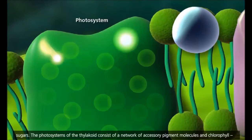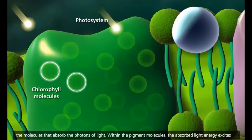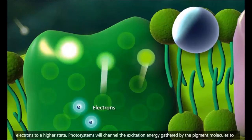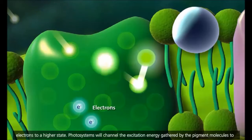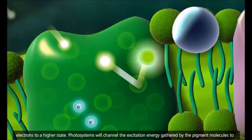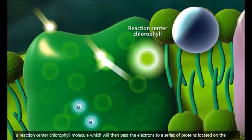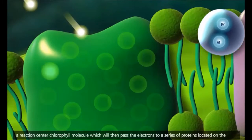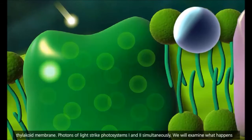The photosystems of the thylakoid consist of a network of accessory pigment molecules and chlorophyll, the molecules that absorb the photons of light. Within the pigment molecules, the absorbed light energy excites electrons to a higher state. Photosystems will channel the excitation energy gathered by the pigment molecules to a reaction-center chlorophyll molecule, which will then pass the electrons to a series of proteins located on the thylakoid membrane.